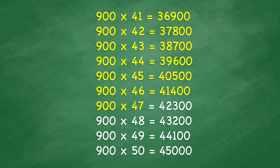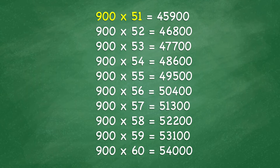900 times 48 equals 43,200. 900 times 49 equals 44,100. 900 times 50 equals 45,000. 900 times 51 equals 45,900. 900 times 52 equals 46,800. 900 times 53 equals 47,700. 900 times 54 equals 48,600. 900 times 55 equals 49,500.